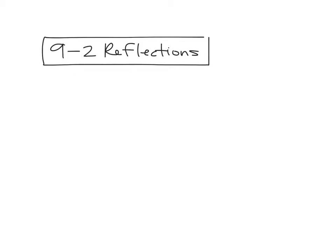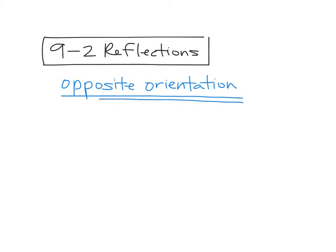We have, with reflections, what's called an opposite orientation every single time. So I'm going to tell you what an opposite orientation is. But this is a good way to judge whether something is a reflection or not. If you have an opposite orientation, oftentimes you're looking at a reflection.